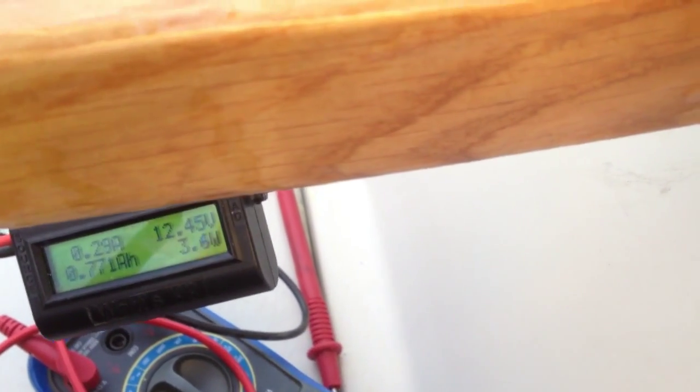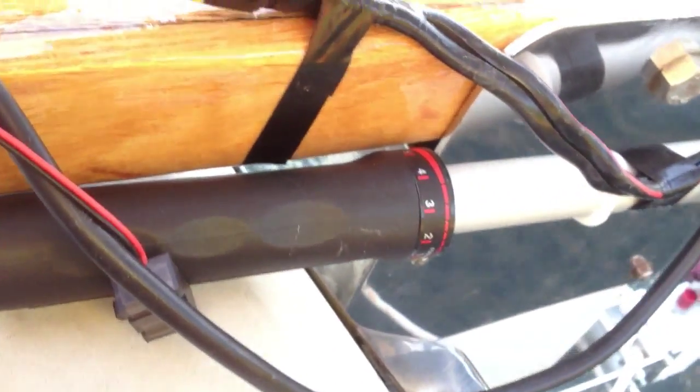I think using a brushed speed controller with a trolling motor is very nice. You'll be able to adjust the speeds very precisely and it will consume less power at lower speeds. With the 5-way switch that my motor came with, a bit of power will be burnt in the resistors at the lower speeds.